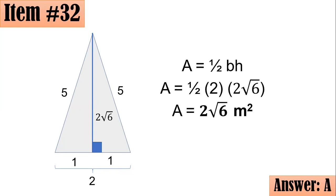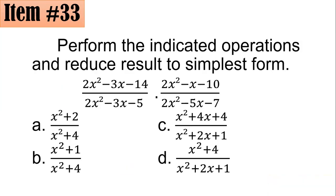Item 33: Perform the indicated operations and reduce to simplest form. We have 2x squared minus 3x minus 14, all over 2x squared minus 3x minus 5, multiplied by 2x squared minus x minus 10, all over 2x squared minus 5x minus 7. Did you go for A, B, C, or D?